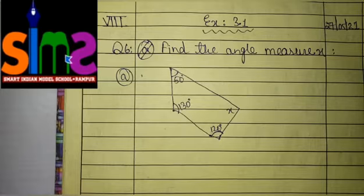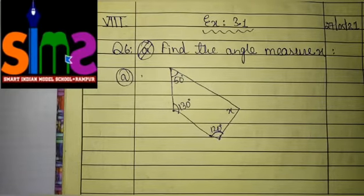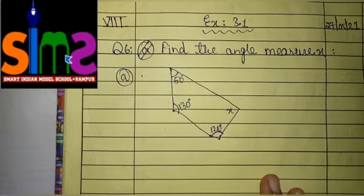As we have already discussed chapter number 3, that is understanding quadrilaterals. We are discussing quadrilaterals about what kind of quadrilaterals are there and what are their properties and something regarding their angles.